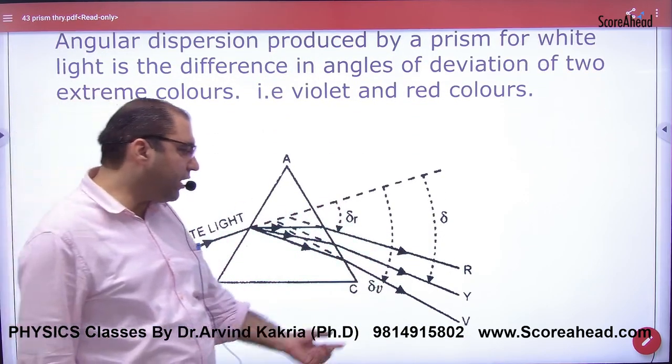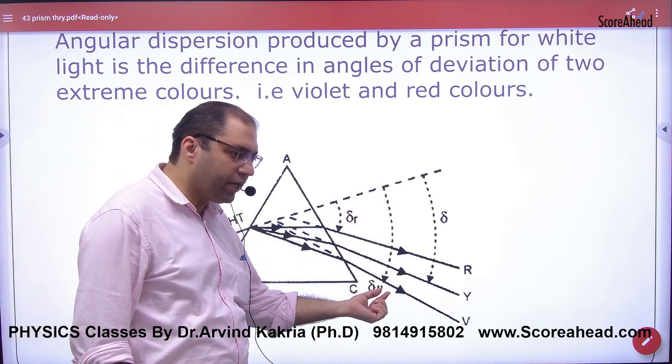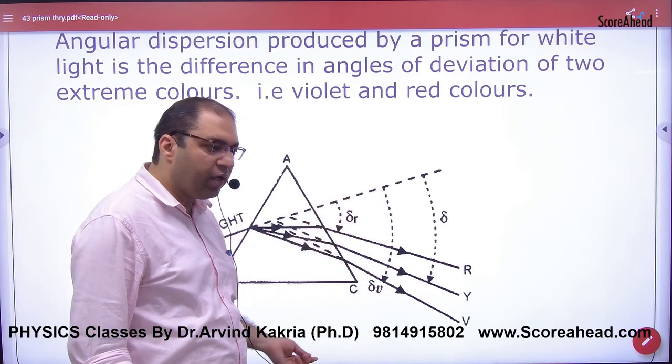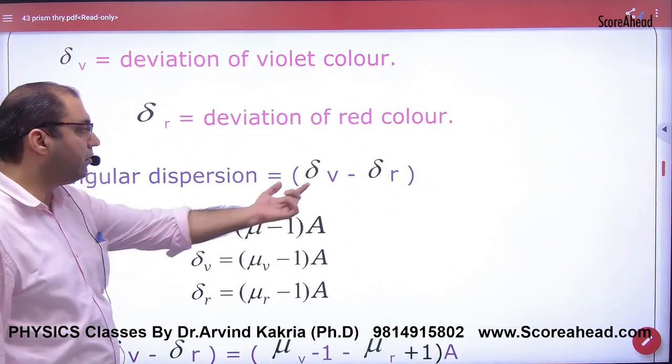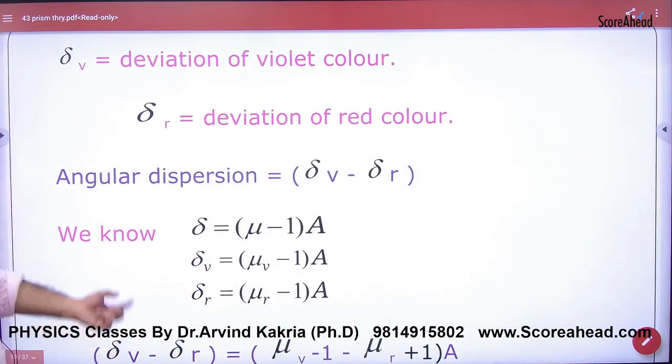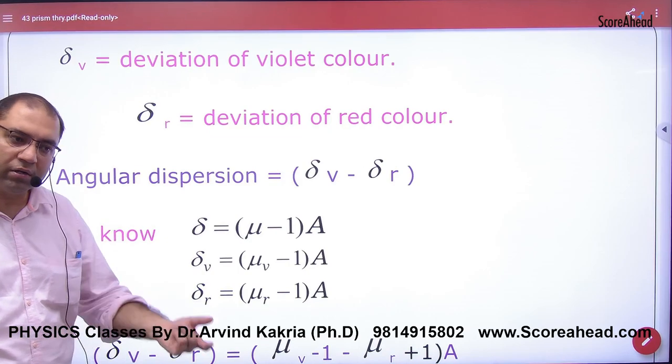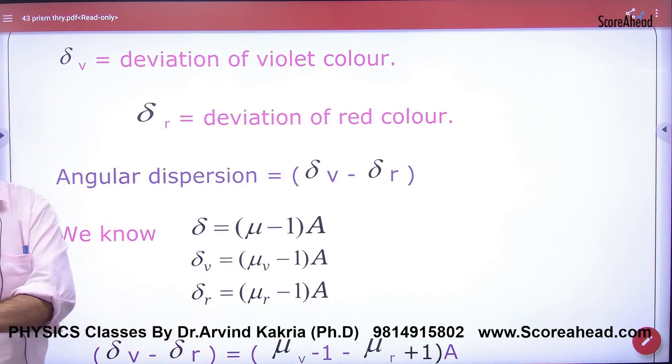What is the most deviation? Violet. Who is the least? Red. So if you remove the difference of deviation, what do we call angular dispersion? Angular dispersion is the difference of deviation. Clear here?